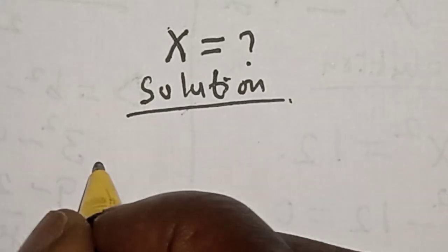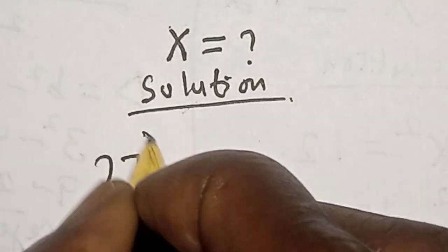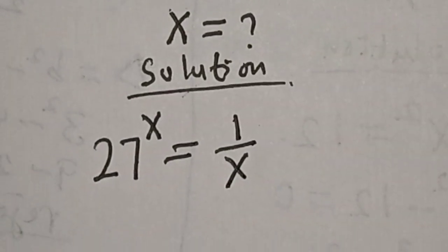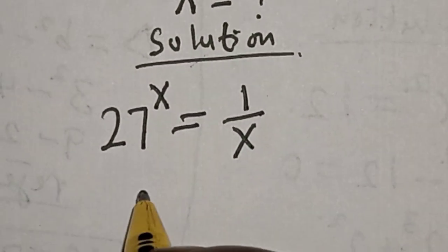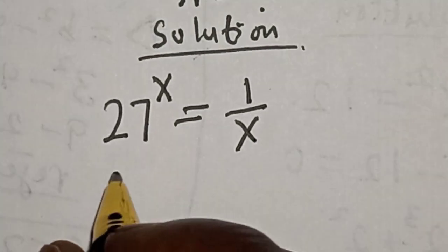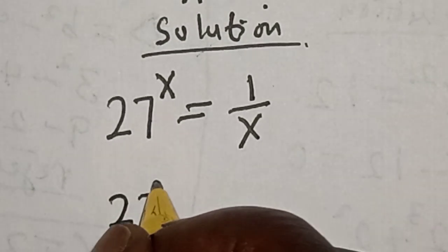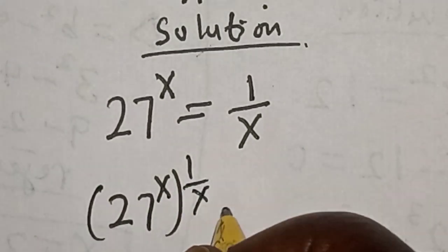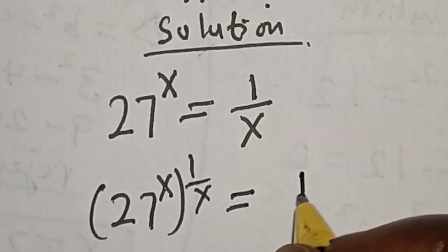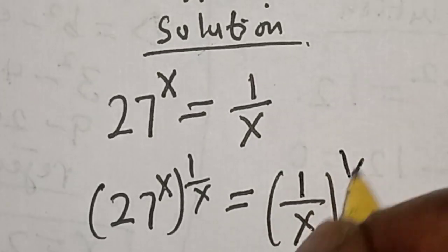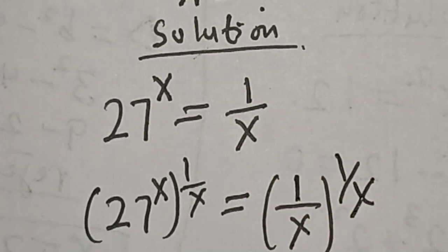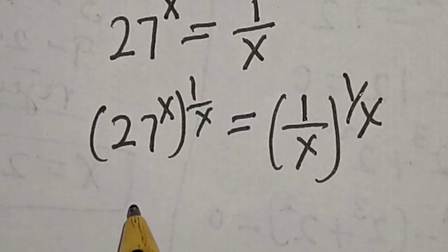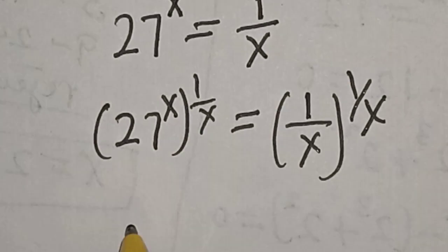We have the given equation: 27 raised to power x is equal to 1 divided by x. Now let's multiply the power of both sides by 1 over x. That is, 27 raised to power x, multiplied by 1 over x, is equal to 1 divided by x, multiplied by 1 over x.